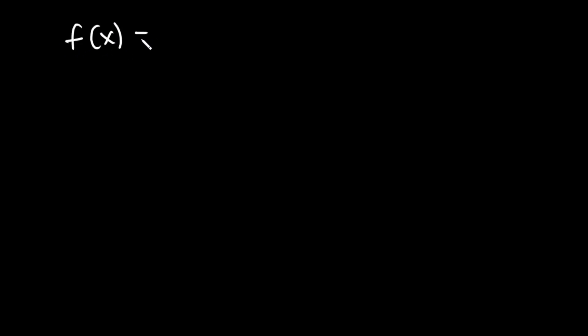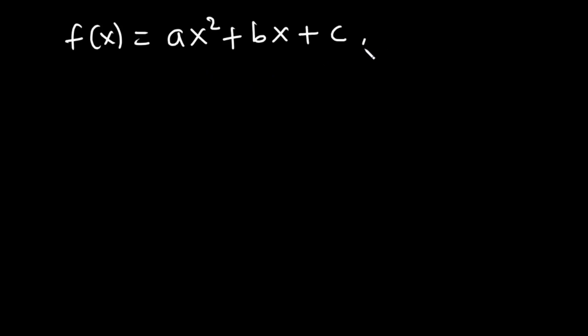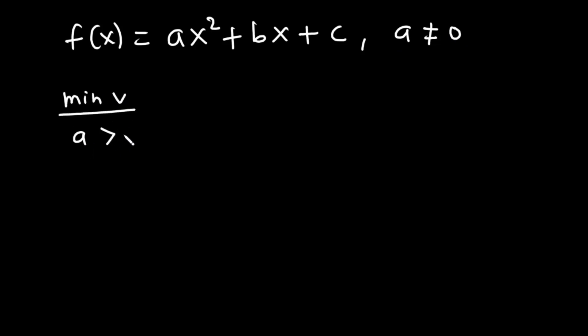Now let's talk about quadratic functions. A quadratic function is a function of the form ax² plus bx plus c, where a, b, and c are all constants and a is not equal to zero. The function has a minimum value when a is greater than zero, and a maximum value when a is less than zero.